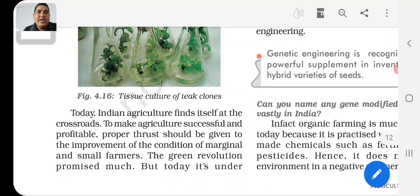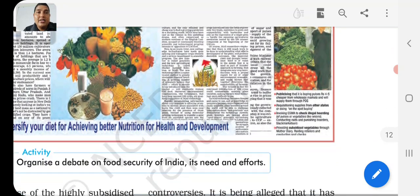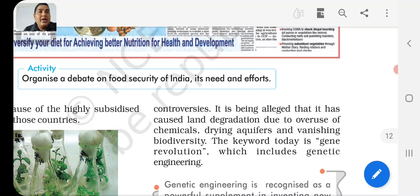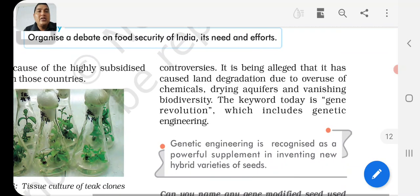Today, Indian agriculture finds itself at the crossroads. To make agriculture successful and profitable, proper attention should be given to improving the conditions of marginal and small farmers. The Green Revolution, which promised much in 1967-68, is today surrounded by controversy. It is alleged that it has caused land degradation due to the overuse of chemicals, depletion of aquifers, and vanishing biodiversity. The key focus today is the gene revolution, which includes genetic engineering.